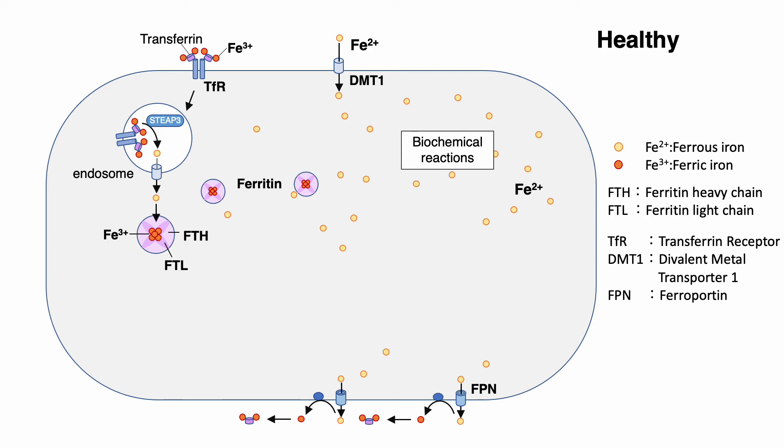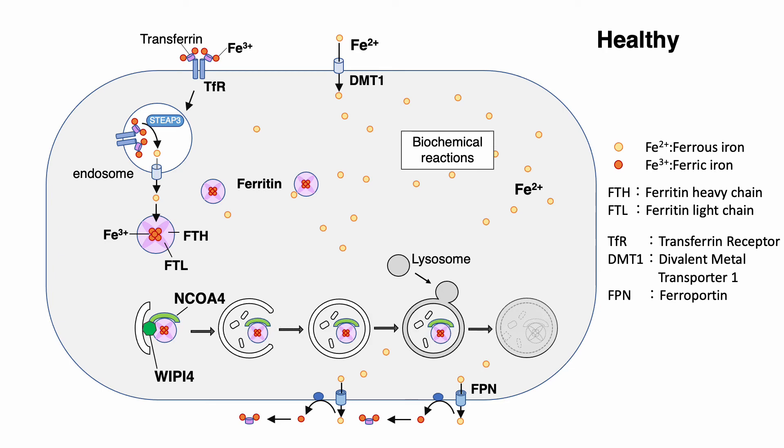Ferritin-specific autophagy is called ferritinophagy. In ferritinophagy, a cargo receptor NCOA4 binds to ferritin and directs ferritin to the autophagosome. Ferritin is then degraded and ferrous iron is released to the cytoplasm for utilization.